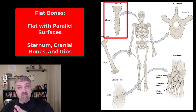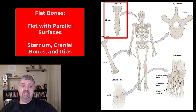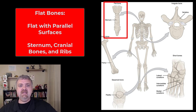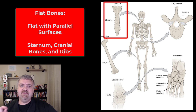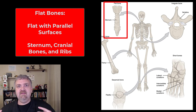Next we have flat bones. Flat bones are going to be flat — the two surfaces generally run parallel to one another. The sternum is a great example. The bones of the skull and your ribs would also be good examples of flat bones. So long bones think extremities, flat bones think your skull and then your thoracic cage.